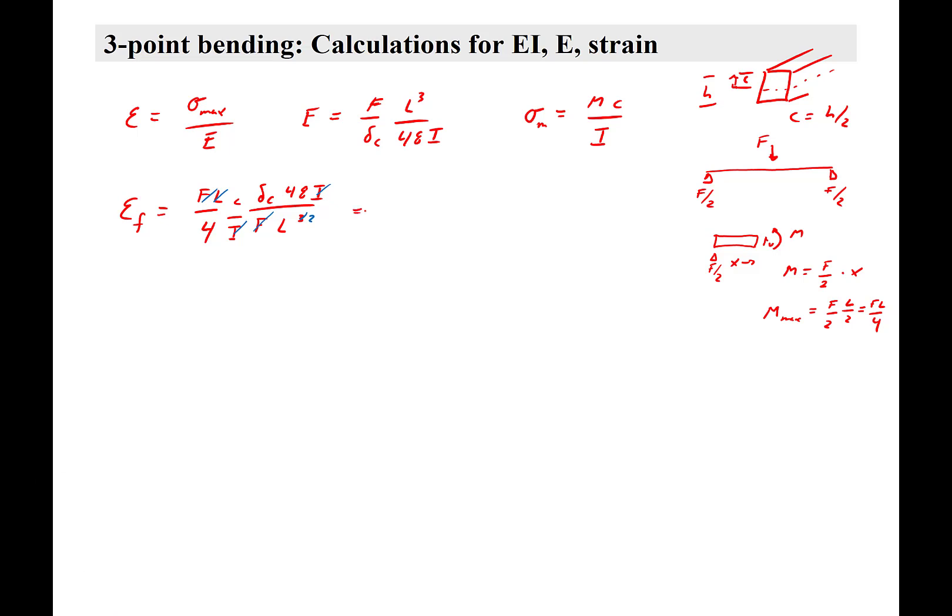And, 48 divided by 4 is 12, so you get 12 del C times C over L squared. Sometimes, you'll see it as 6 del C over L squared, times the thickness of the material H, because C is equal to H over 2.